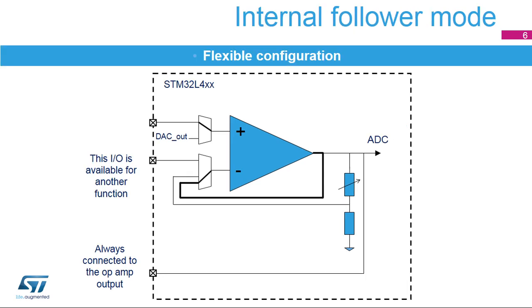The operational amplifier can be configured as an internal voltage follower, where the internal switch connects the output to the inverting input. In internal voltage follower mode, the GPIO pad assigned to the op-amp's inverting input is free, so that it may be used with a different function as subsequently assigned in the GPIO selection process.